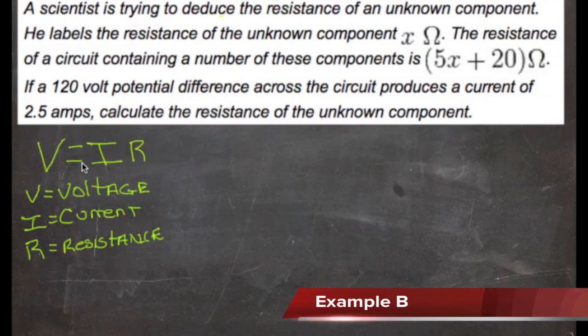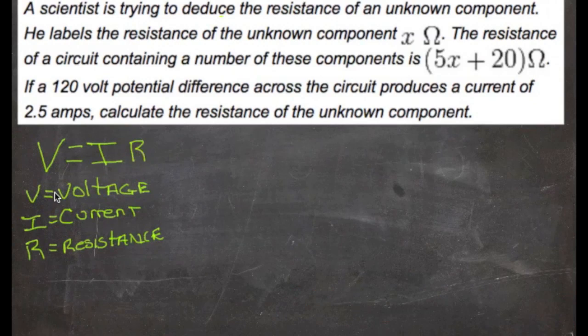This word problem uses a specific formula, V equals IR. V is for voltage, I is for current, and R is for resistance. So actually, solving this word problem is a lot less difficult than it seems. All we need to do is take the values that were given and plug them into the formula.